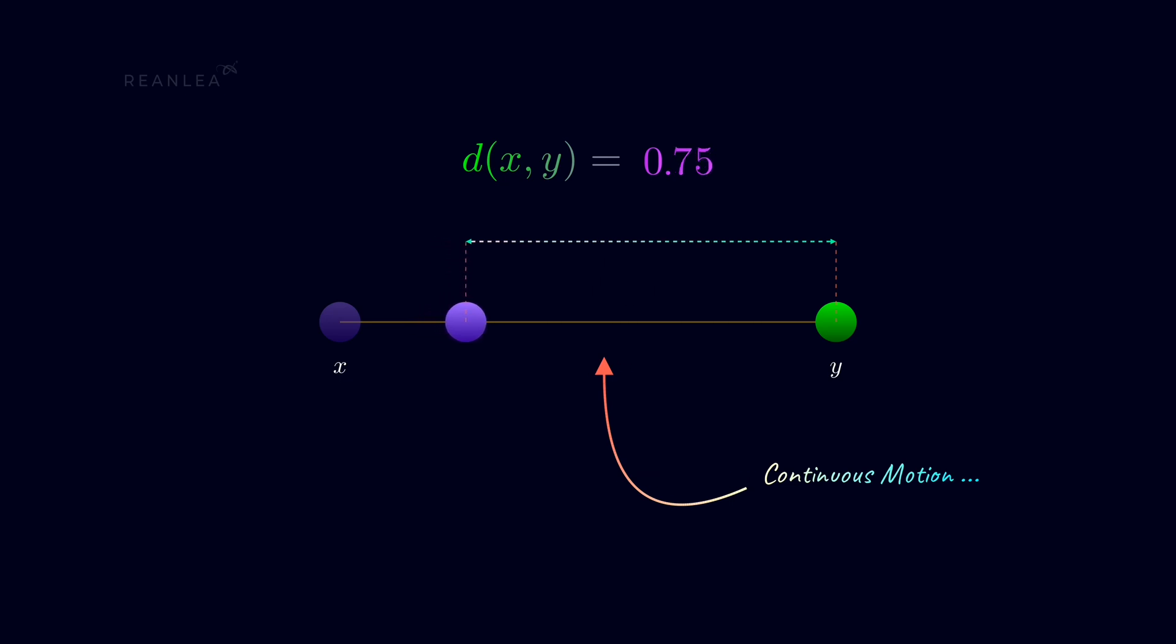In the next lecture series, we'll discuss how the distance as a function between two points be continuous on those two points taken as variables. In fact, the continuity will be uniform. But here, we can see how the continuous motion of the point x along the real line affects the distance between x and y. And we can simply conclude that the distance between the points x and y tends to 0 when x tends to y.